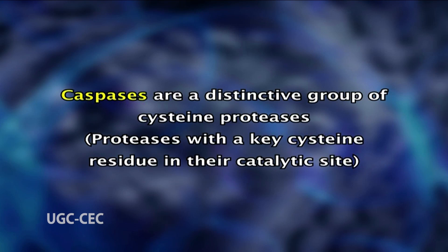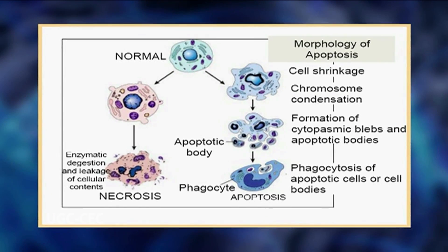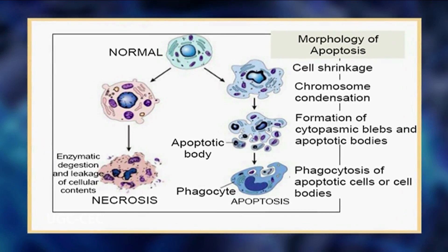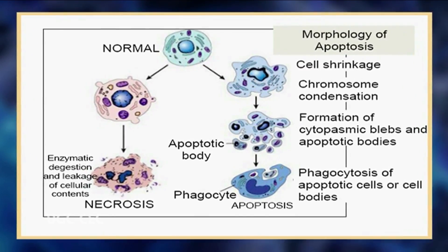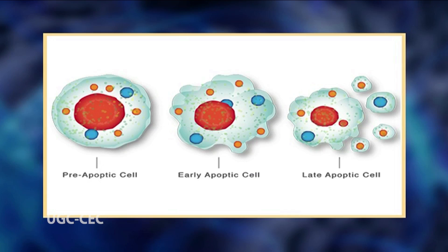Recent studies have focused on events that lead to activation of a cell suicide program. Caspases are a distinctive group of cysteine proteases — proteases with a key cysteine residue in the catalytic site — that are activated at an early stage of apoptosis and are responsible for triggering most, if not all, of the changes observed during cell death. Apoptosis can be triggered by both internal stimuli, such as abnormalities in the DNA, and external stimuli, such as certain cytokines.